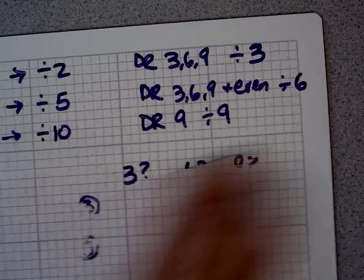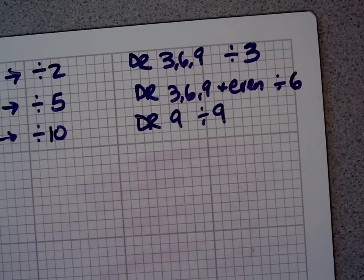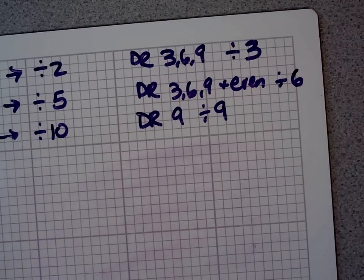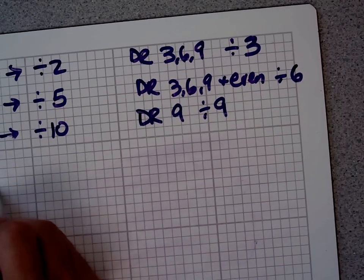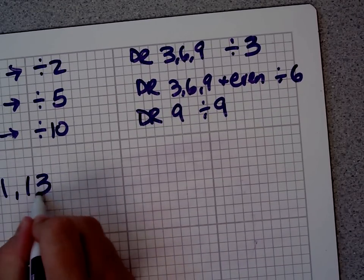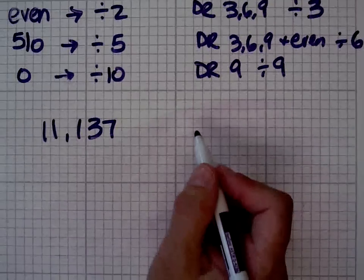You can tell that on every single number that you're dealing with, large numbers or small numbers. I might not know if 11,137 is divisible by 3, 6, or 9,